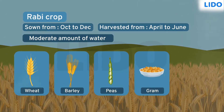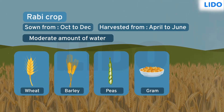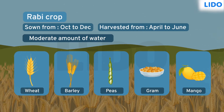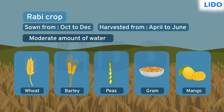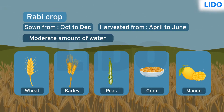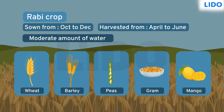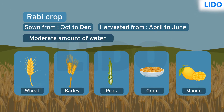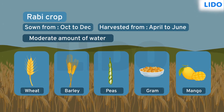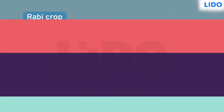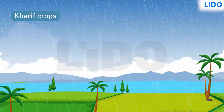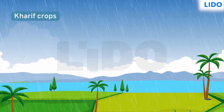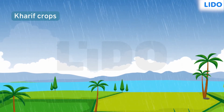And my favourite fruit, mango, which is harvested in April — that's why mangoes are available in the market around May and June.